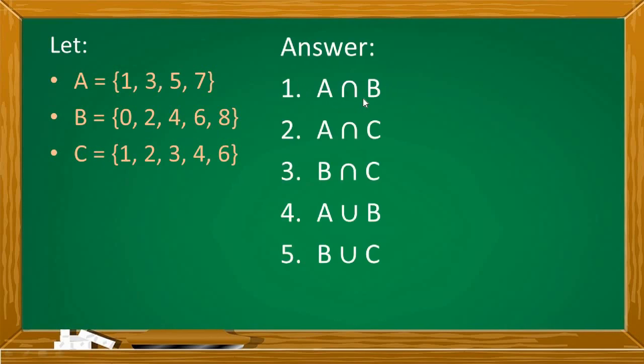Number 1, A intersection B. Anong elements ang parehong meron sina set A at set B? Set A are odd numbers from 1 to 7. Set B are even numbers from 0 to 8. Meron ba silang common elements? Wala. So their intersection is an empty set or a null set.